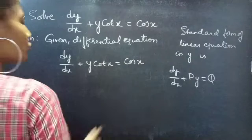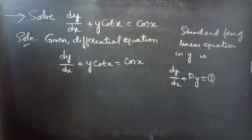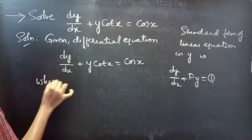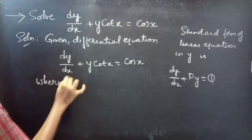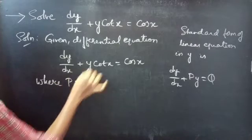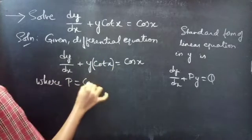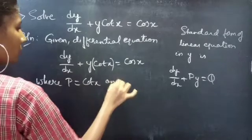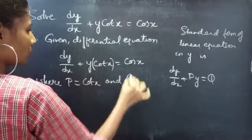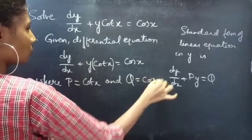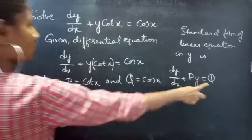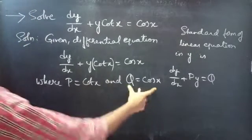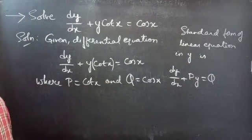By comparing these two, we will get p and q, where p equals to cot x and q equals to cos x. Here p and q are functions of x.